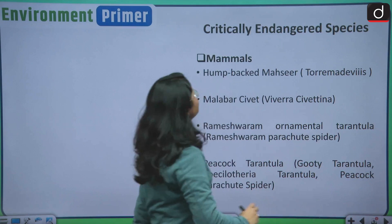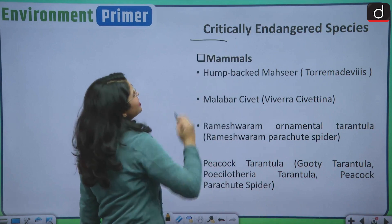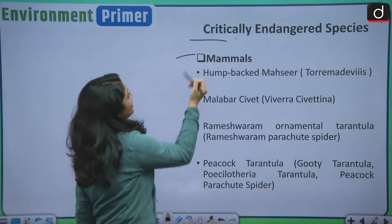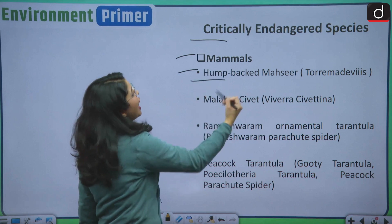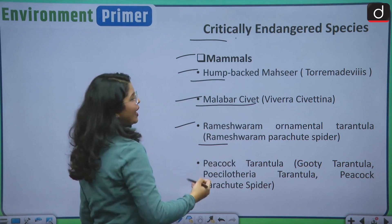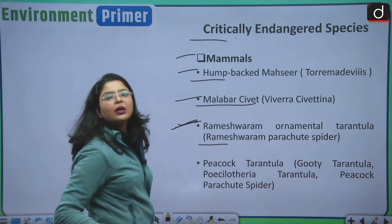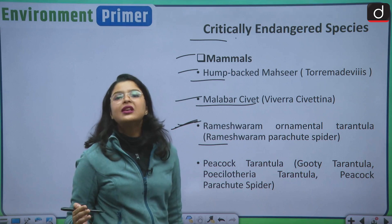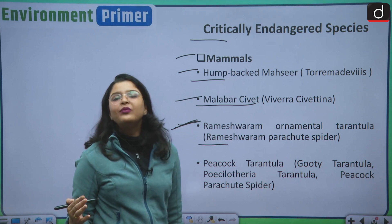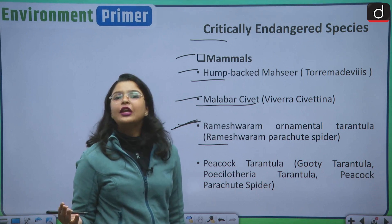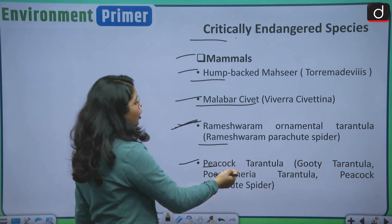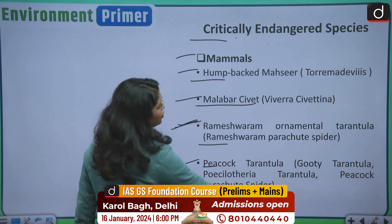Moving forward, let us see some of the critically endangered species in India. Firstly, in the category of mammals, we have Humpback Mahseer, then Malabar Civet, Rameshwaram Parachute Spider. This becomes very important because I think there has been a PYQ on this Rameshwaram parachute spiders. And the problem with spiders is that they are not protected in any of the schedules of the Wildlife Protection Act. Then there is Peacock Tarantula, Parachute Spider.